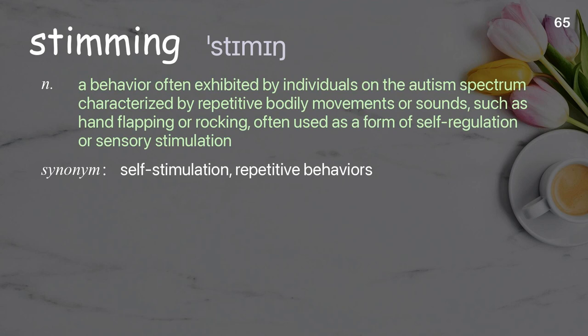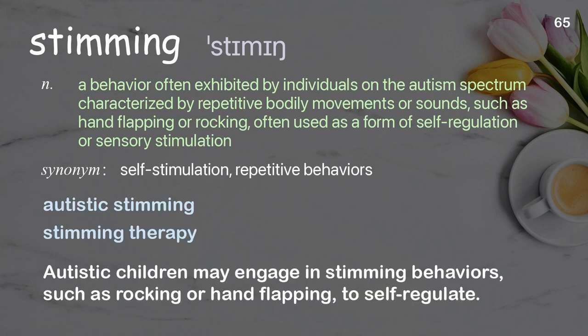Stimming. A behavior often exhibited by individuals on the autism spectrum, characterized by repetitive bodily movements or sounds, such as hand flapping or rocking, often used as a form of self-regulation or sensory stimulation. Examples: autistic stimming, stimming therapy. Autistic children may engage in stimming behaviors, such as rocking or hand flapping, to self-regulate.